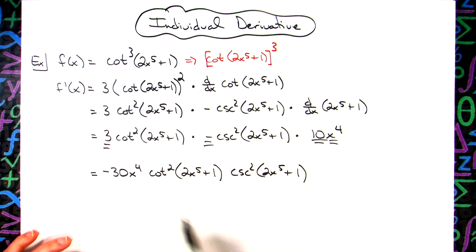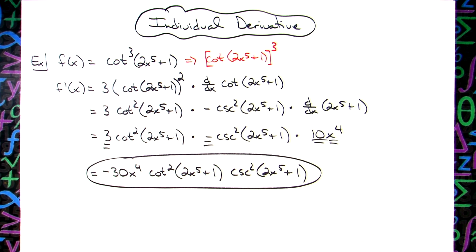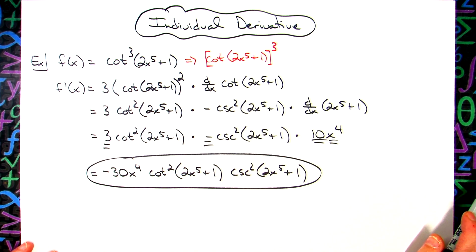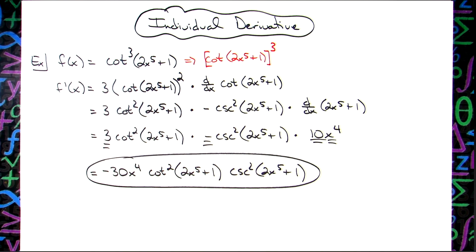So a pretty straightforward trig derivative here, but definitely two chains. Keeping that inside and outside function straight makes a difference. And definitely using that ddx notation will help so that you don't lose track of how many chains you have. Definitely thanks for watching. If the videos are helping, please share with your friends so they can benefit too. And don't forget to subscribe to the channel. Thanks.